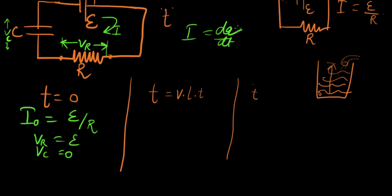All the voltage of the battery now appears across the capacitor and nothing across the resistor. Why? Because I is basically dQ over dt. I depends on charge.